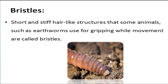Our next keyword is bristles. These are short, hair-like structures that some animals such as earthworms use for gripping while moving. As you can see in the figure, earthworms have these small structures used for movement. These are called bristles.